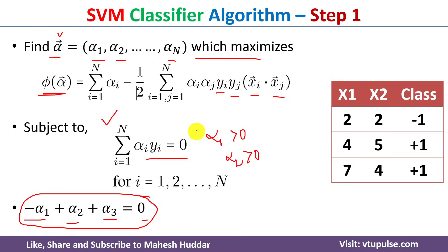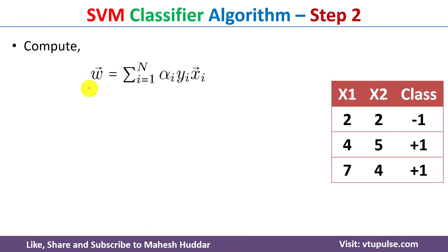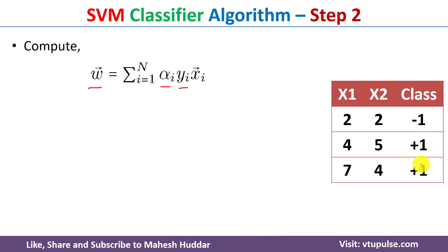Once we have calculated the alpha vector, the next step is to calculate the weight vector. The weight vector is: w = summation of alpha_i * y_i * x_i, for i = 1 to N. We already have alpha1, alpha2, alpha3 from step one. The targets y_i and input vectors x_i are also known, so we can easily calculate the weight vector.